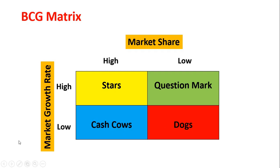When market growth rate is low and market share is also low, that falls under Dogs. So Dogs fall under low market share and low market growth rate. So it is called Dogs.